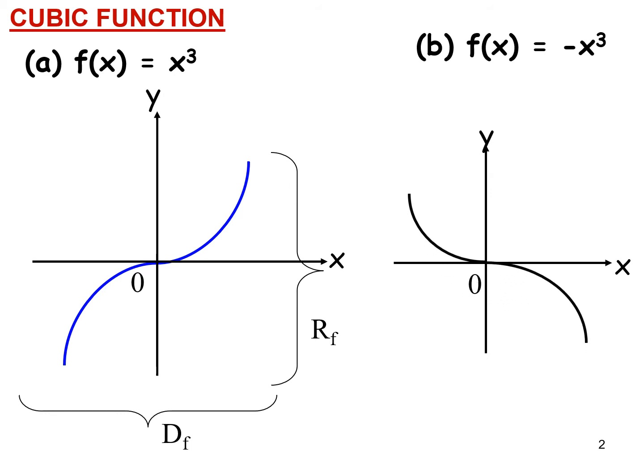For f(x) = -x³, the shape is reflected. The domain is still all real numbers and the range is also all real numbers.